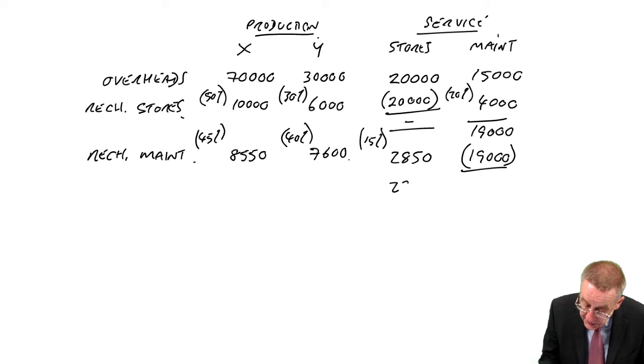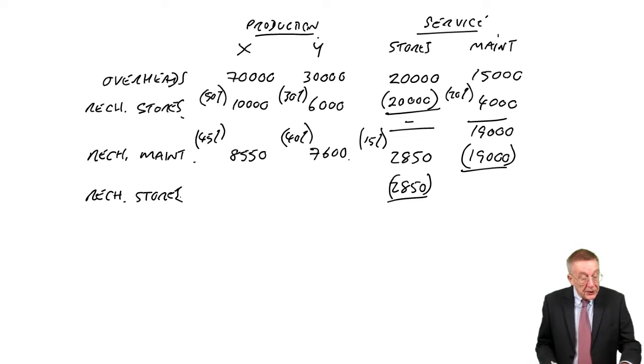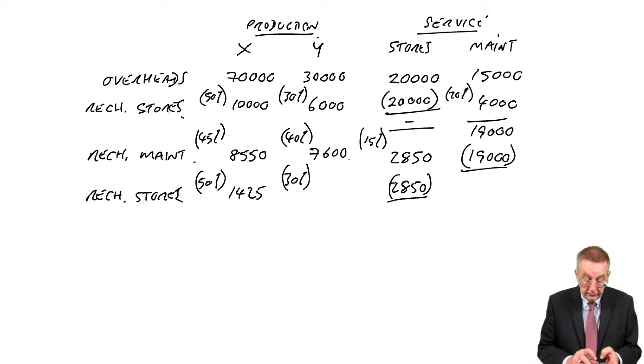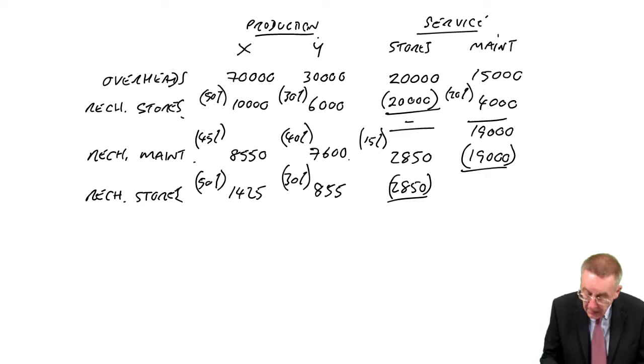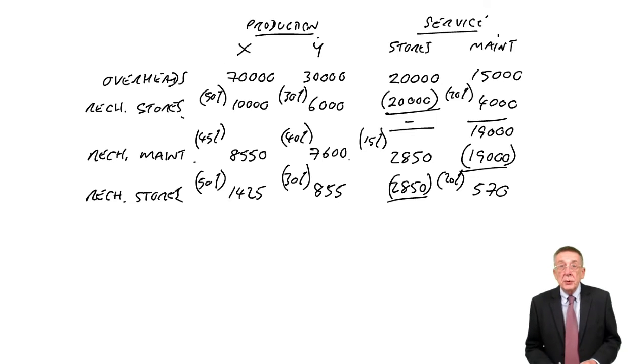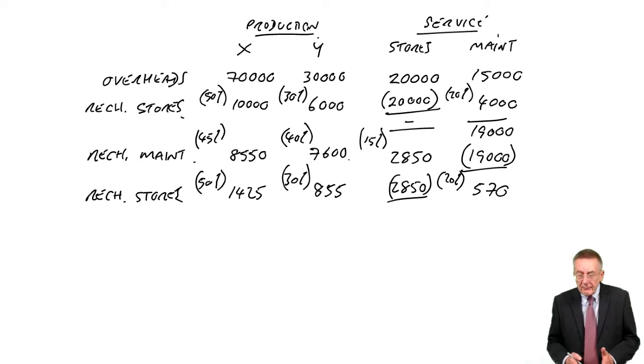So we're going to have to recharge that 2850. Take that 2850, recharge to the other departments. How are stores doing the work? 50% for production X, which is 1425. 30% for Y is 855. And of course, 20% is maintenance, 570. And you can see what's happening. Maintenance has reappeared. So now we're going to have to recharge maintenance. And it goes on and on. Although it doesn't actually take too long, as you'll see, because the amount is getting smaller each time. And because we don't worry about cents, we do things to the nearest dollar.